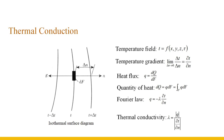The temperature varies in any direction that intersects the isothermal surface, with the most significant change in the n-direction normal to the isothermal surface. The limit of the ratio of the temperature difference ΔT to the distance Δn between two isothermal surfaces along the normal n-direction is called the temperature gradient.